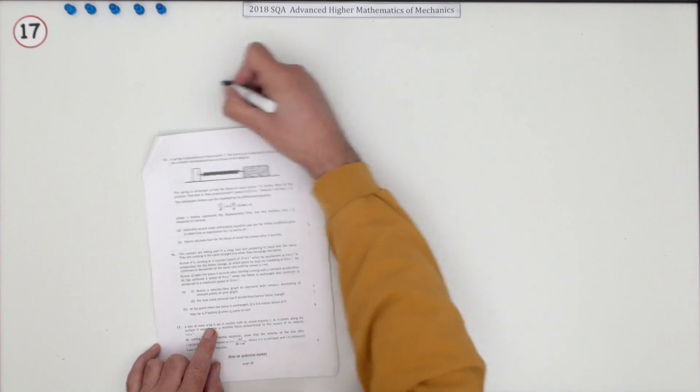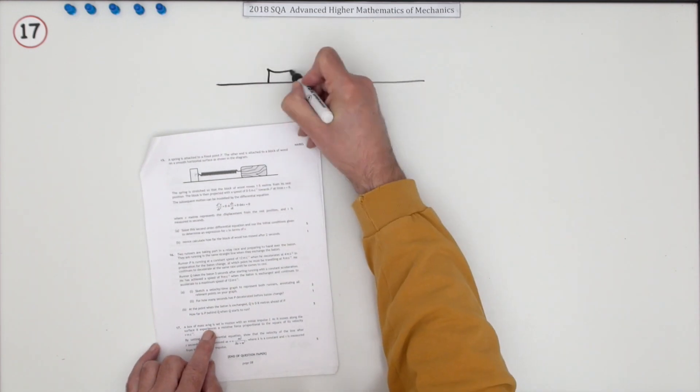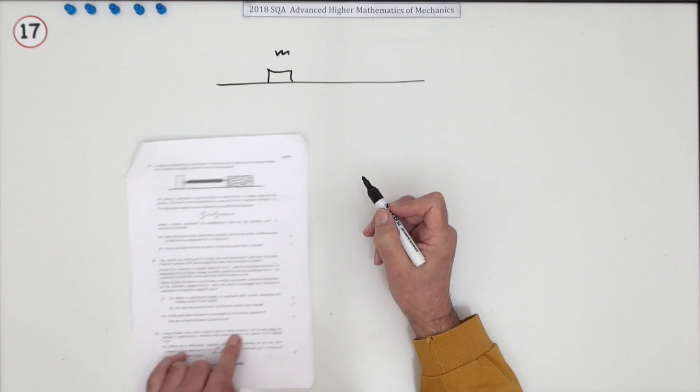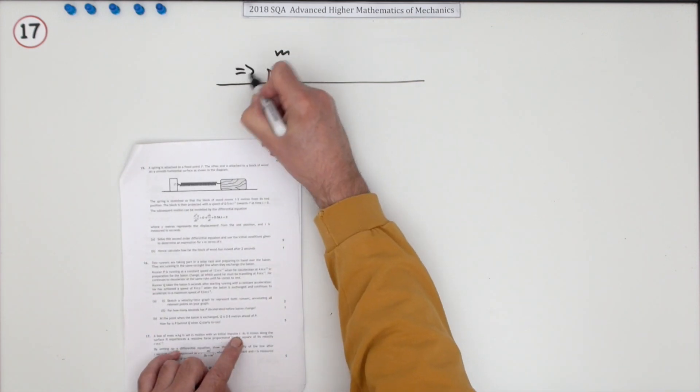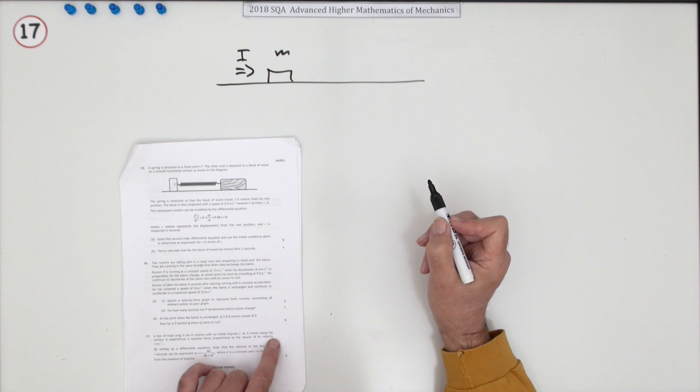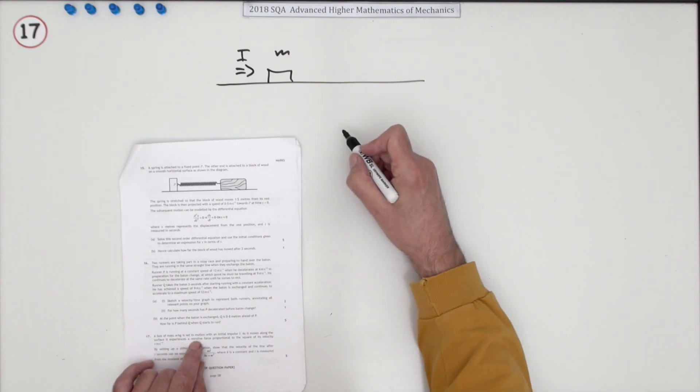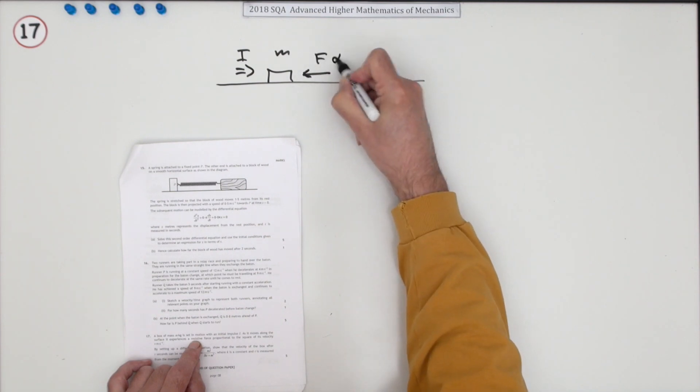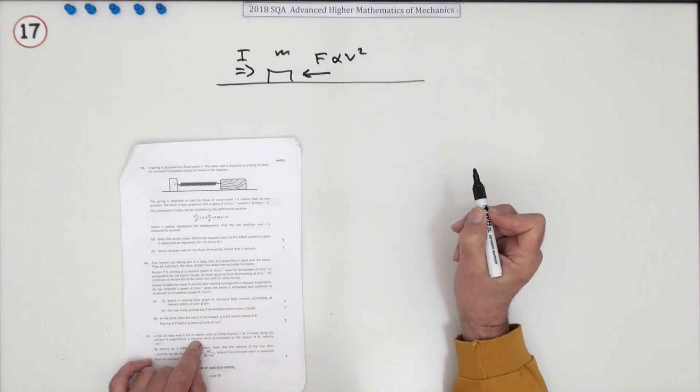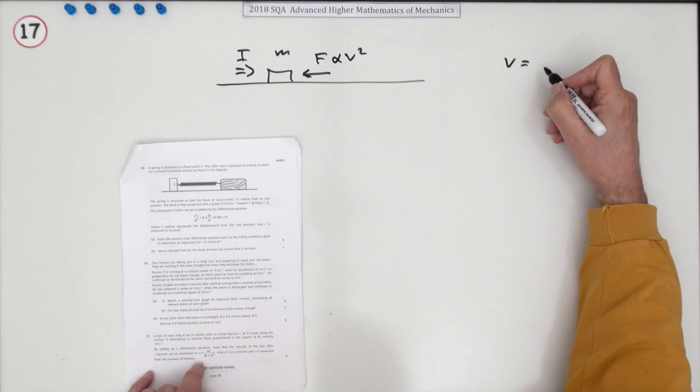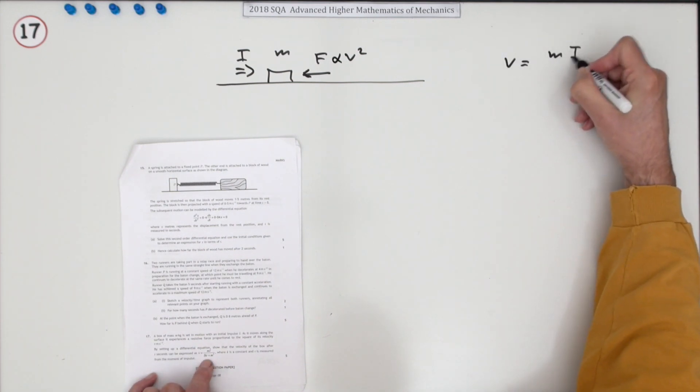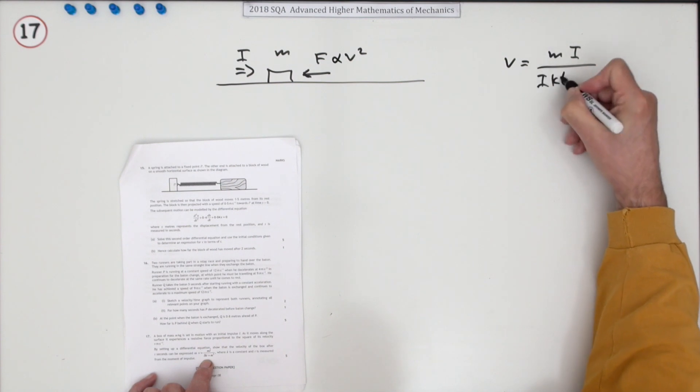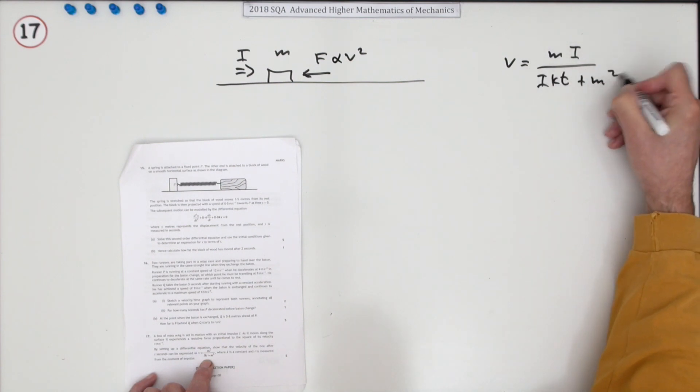A box of mass M is set in motion by initial impulse. As it moves along the surface, it experiences a resistive force which is proportional to the square of the velocity. By setting up a differential equation, show that the velocity of the box after t seconds can be expressed as V equals MI over IKT plus M squared.